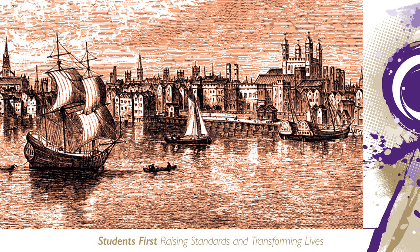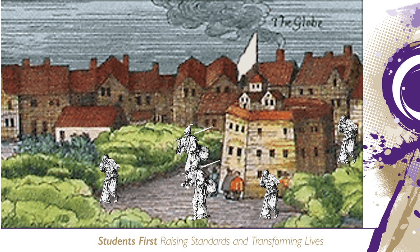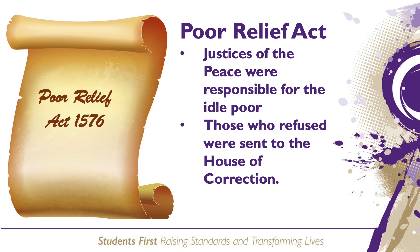Despite the introduction of these new laws, poverty remained a problem throughout Elizabeth's reign due to the fact that trade was disrupted massively by conflict with Spain and the revolt in the Netherlands. More and more vagabonds began to appear in towns and cities looking for work. Providing the poor with a means to make things to sell under the Poor Relief Act of 1576 helped the unemployed keep some independence and dignity and often enabled them to stay in their own hometown or village.